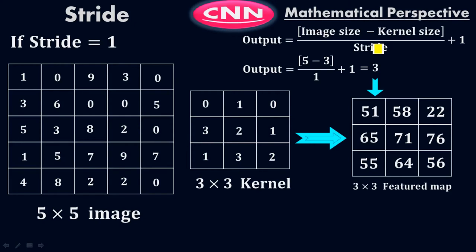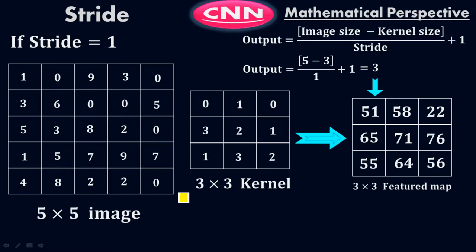To know the dimension of the feature map before doing all this process, you can simply apply the formula: output = (image_size - kernel_size) / stride + 1. The image size is 5, kernel size is 3, stride is 1. So (5 - 3) / 1 + 1 = 2 + 1 = 3. This three means a 3x3 feature map. We have extracted the important features out of this image, leaving others, so the initial dimension is higher compared to the new dimension.